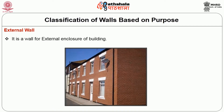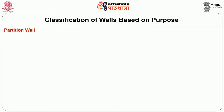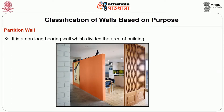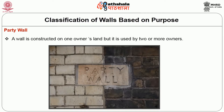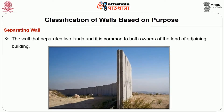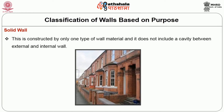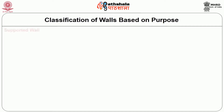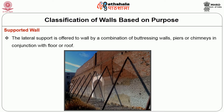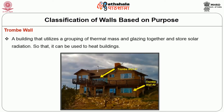An external wall is a wall forming the external enclosure of a building. A partition wall is a non-load-bearing wall which divides the area of the building. A party wall is constructed on one owner's land but is used by two or more owners. A separating wall separates two lands and is common to both owners of adjoining buildings. A solid wall is constructed by only one type of wall material and does not include a cavity between external and internal walls. A supported wall has lateral support provided by a combination of buttering walls, piers or chimneys in conjunction with floors or roofs. A trombe wall utilizes a grouping of thermal mass and glazing together to store solar radiation so that it can be used to heat the building.